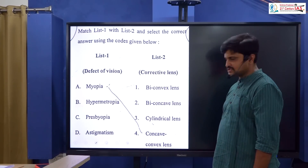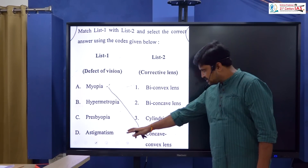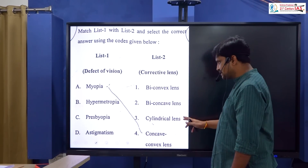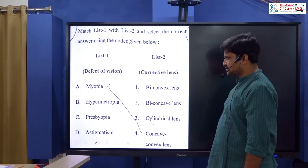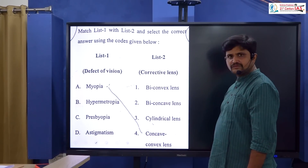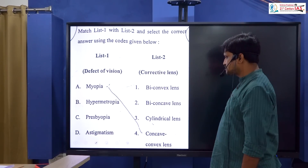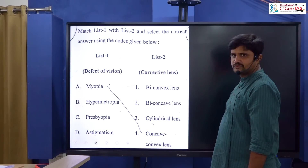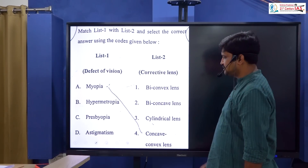Regarding eye conditions: NEEX and NEUS relate to stigmatism and cylindrical lens; presbyopia uses convex and concave lens with spike focal lens. This is the correct option.